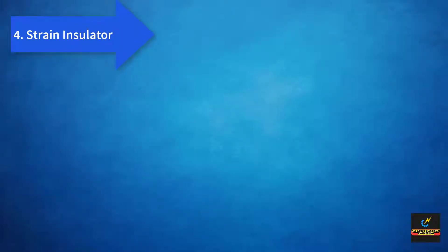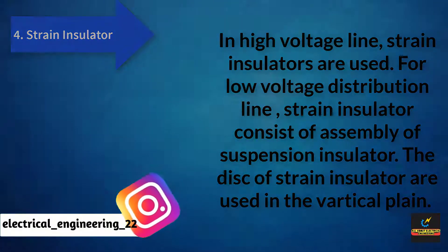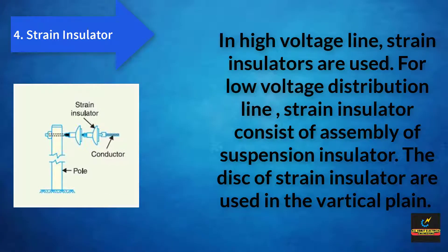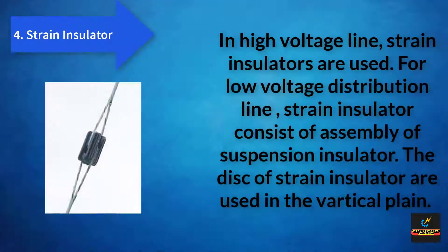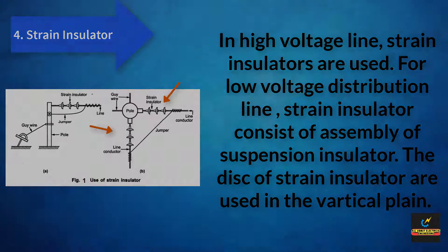The fourth type of insulator is the strain type insulator. In high voltage lines, strain type insulators are used. For low voltage distribution lines, strain type consists of an assembly of suspension insulators. The discs of strain insulators are used in the vertical plane.